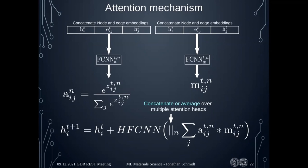Q&A on number of attention heads: right now it's probably around six attention heads. Experimenting with large networks is computationally expensive, so we slowly increased the number of parameters — attention heads and embedding size — until we got no further improvement. In modern natural language processing where the attention mechanism is also used, a lot more attention heads are typically used, so it's more trial and error.